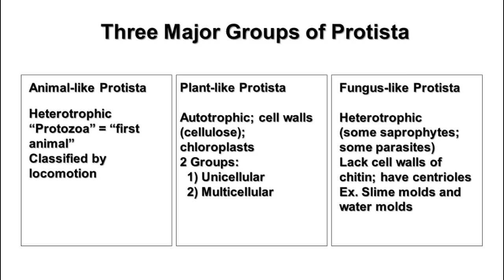The second group, the plant-like protista, are autotrophic. They have cell walls or some kind of cell covering, often made of cellulose but sometimes of other substances. They have chloroplasts and undergo photosynthesis. There are two main groups of plant-like protista: the unicellular ones and the multicellular ones.